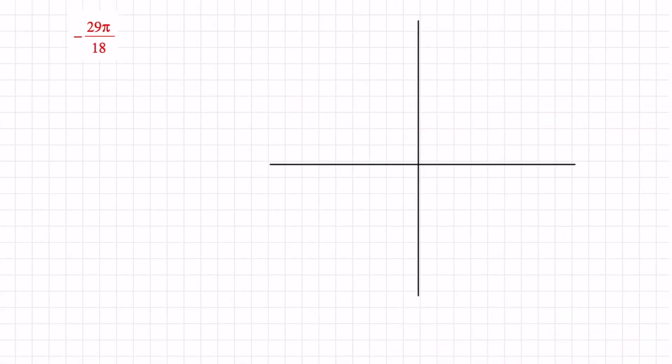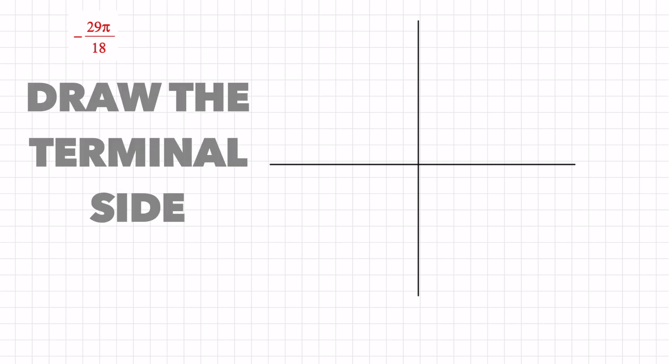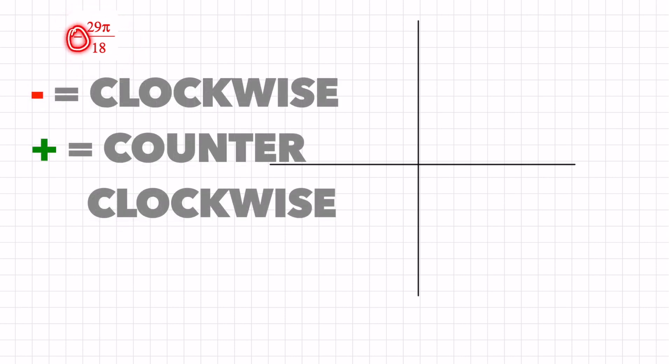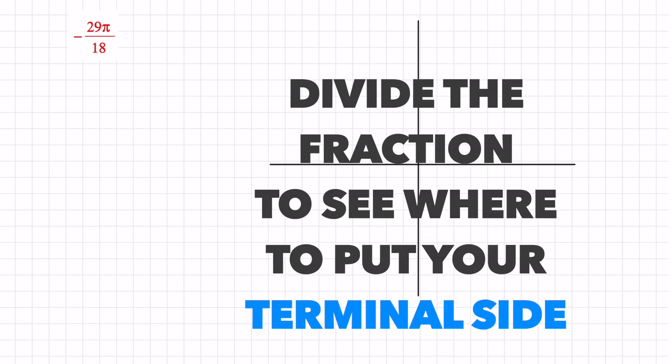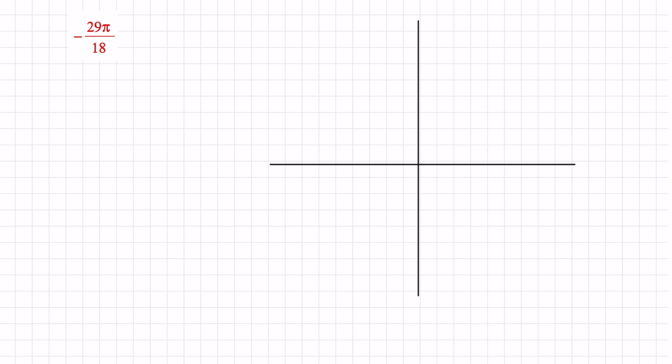When I get a problem like this, the very first concern that I have is that I have to draw my terminal side. The negative in this part just tells me what direction I have to go to draw my terminal side. And a negative means I have to go clockwise. The second thing that I do is that I just divide these two numbers to see if there's one full rotation in there. And it also helps me gauge where I'm going to draw my terminal side.